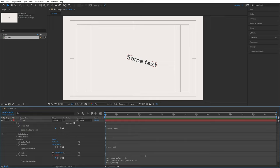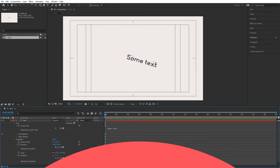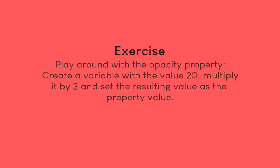With that we have covered some of the most fundamental concepts of programming in After Effects. It hasn't done too much yet, but in the next tutorials we will see much more interesting examples. For an exercise, I want you to play with the opacity property: create a variable with the value 20, multiply it by 3, and set the resulting value as the property value. Pause the video now and try this yourself.